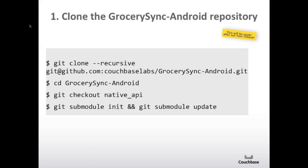Here's how to clone the Grocery Sync Android repository. This actually includes the Grocery Sync demo itself and it will pull the Couchbase Lite core modules that it needs. The tricky part is that after you do the clone, which is straightforward, you'll need to switch to the native API branch, and then you'll need to init and update the submodules. As a disclaimer, this is going to be easier once we have our next release and it will be better packaged, but I wanted to demo the native API to give a better picture of how this is going to look once we go GA with this release.